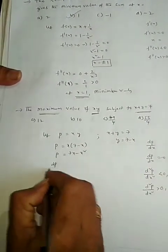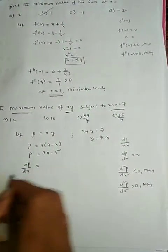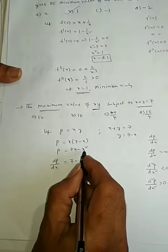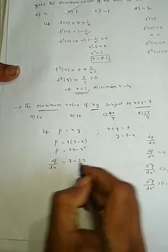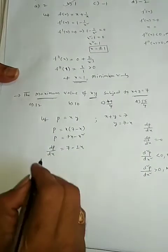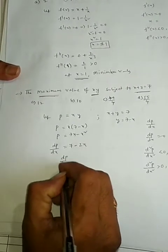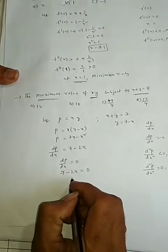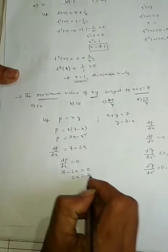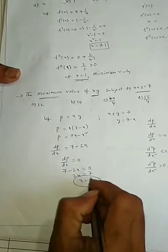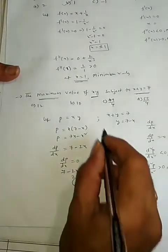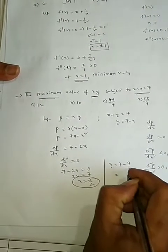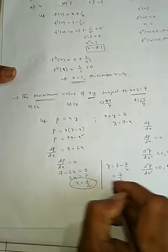So find dp by dx: dp by dx is equal to 7 minus 2x. Making the derivative equal to 0 for either maxima or minima: 7 minus 2x is equal to 0, so 2x is equal to 7, and x is equal to 7 by 2. After getting x, find the y value: y is equal to 7 minus 7 by 2, which is also 7 by 2.